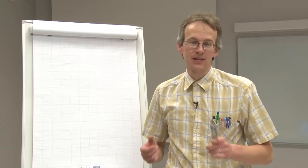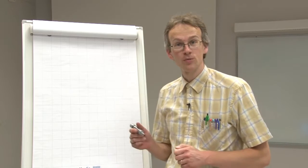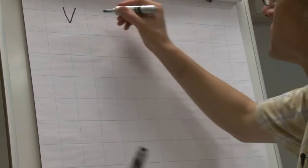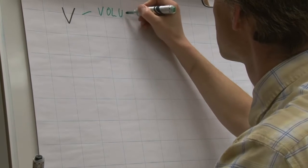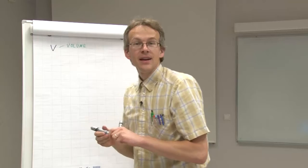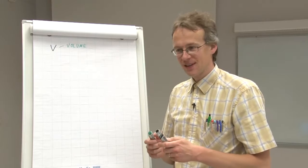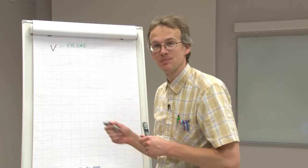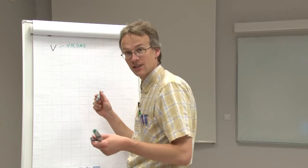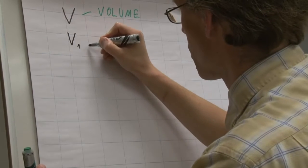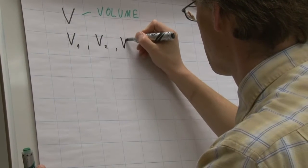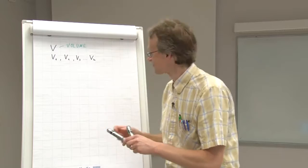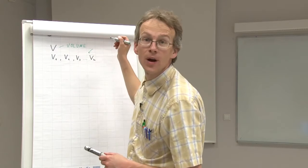Suppose we have a pipet and we are pipetting a volume which we denote by V. We pipet several times and get each time a slightly different volume because of the random effects that affect pipetting. The volumes that we actually get are V1, V2, V3, etc., until Vn. These are the individual volumes.